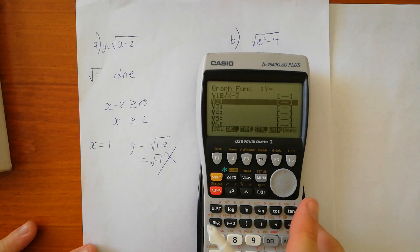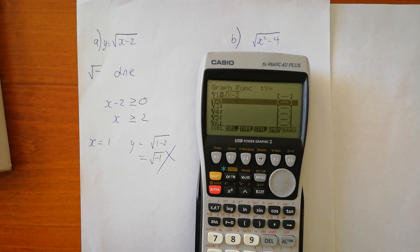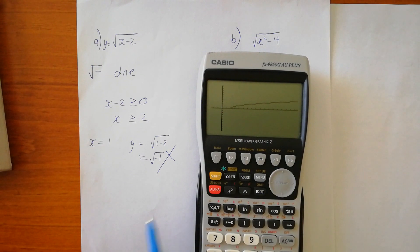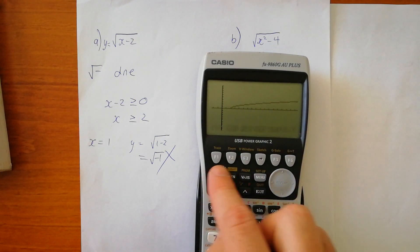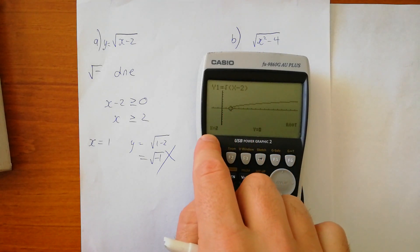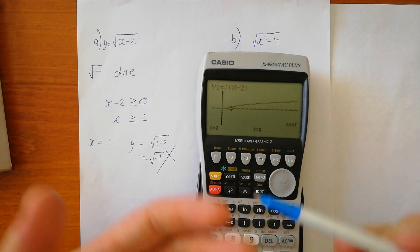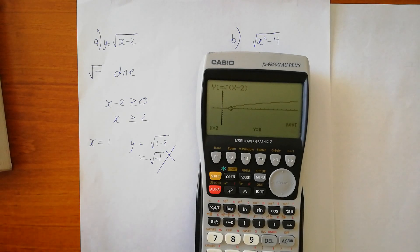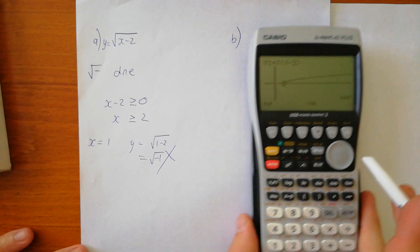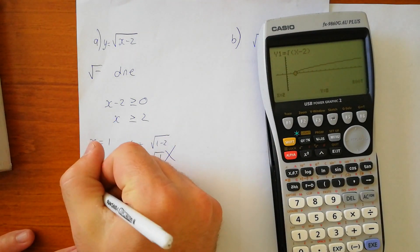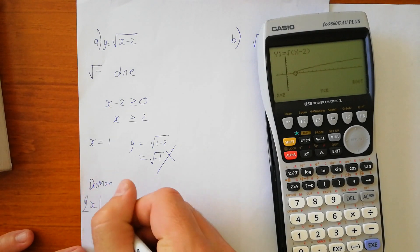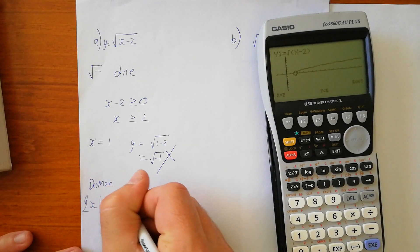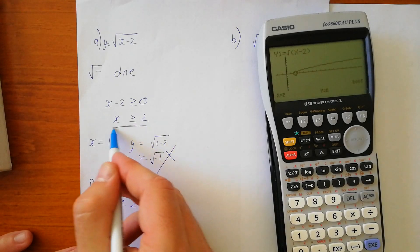Now we look at the calculator. When I input the function — the square root of x take 2 — and we graph it, we can see this curve here sloping away from the x-axis. That point on the x-axis is x equals 2, because to the left of that the function does not exist. To the right, it exists infinitely. So for our domain, we have x where x is greater than or equal to 2.